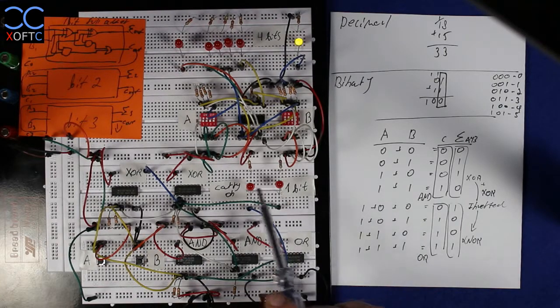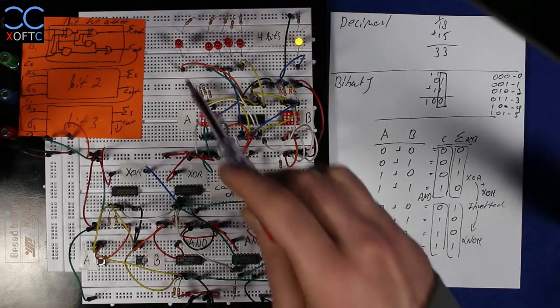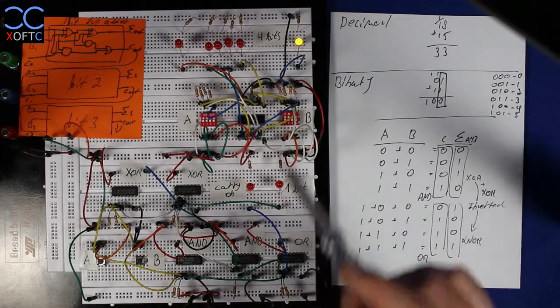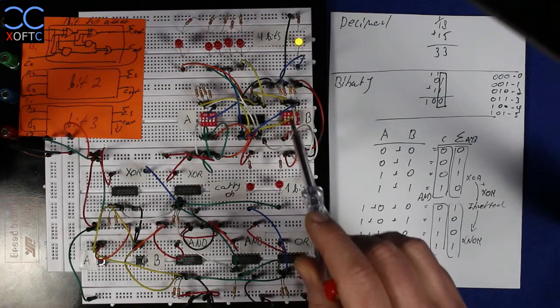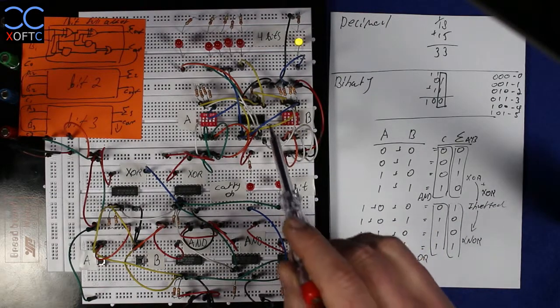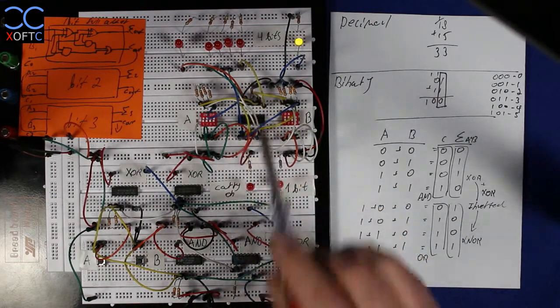and it will produce the sum and the carry-on. And here we have a circuit of a 4-bit full adder. That means that we can add two values, each 4-bit length. And we're going to talk about this a bit later.